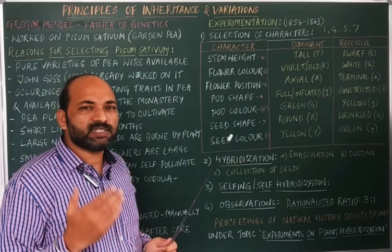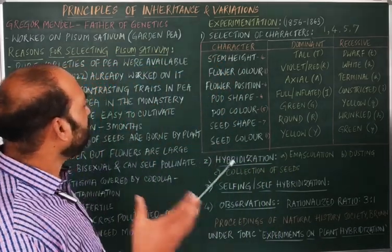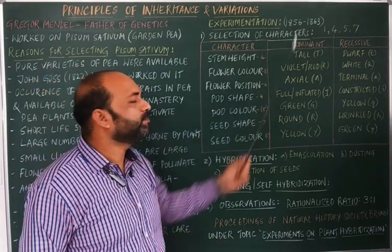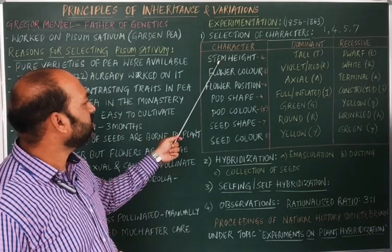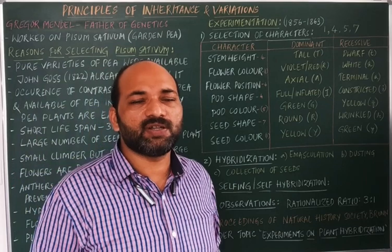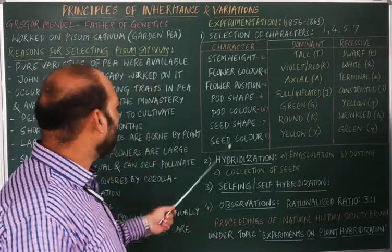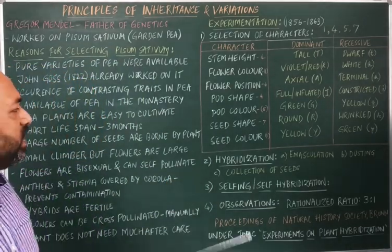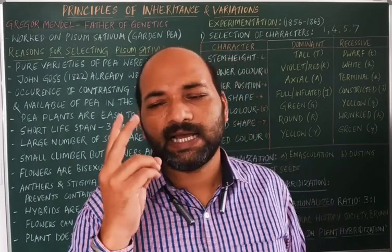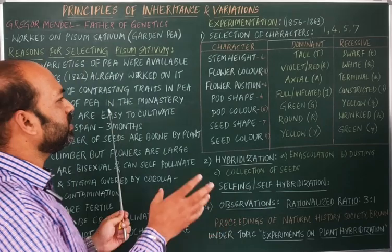Which gene controls a particular character and is present on which chromosome: the genes which code for color of the flower and color of the seed are present on chromosome number 1. The genes which code for stem height, position of the flower or pod, and shape of the pod are present on chromosome number 4. The gene which encodes for color of the pod is present on chromosome number 5. Lastly, the gene which codes for shape of the seed is present on chromosome number 7. Seven characters were selected and each character has two traits, so seven characters or 14 traits were present.